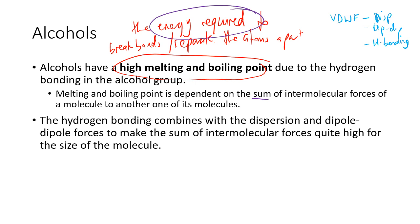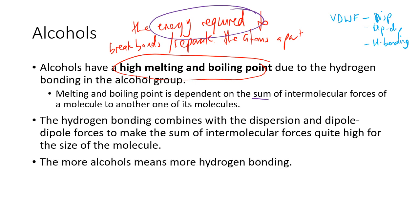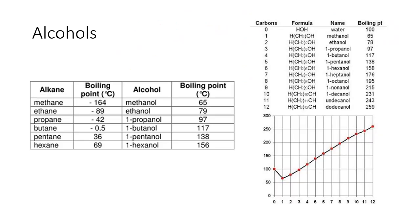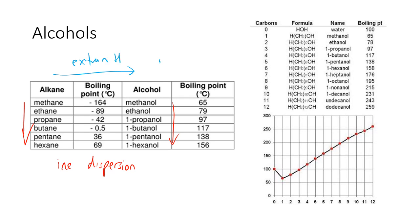More alcohol groups means more hydrogen bonding — so a diol will have a slightly higher boiling point than a single alcohol of similar molecular size. As the molecular size increases, the boiling point increases due to increased dispersion forces. But converting to an alcohol adds that extra hydrogen bonding, which increases the sum of van der Waals forces and gives it a higher boiling point.